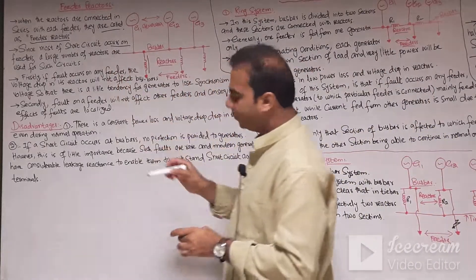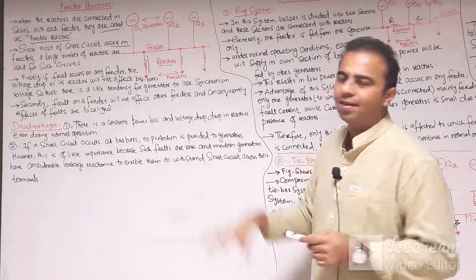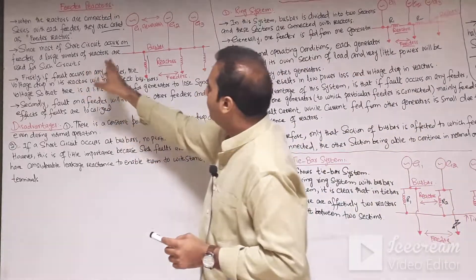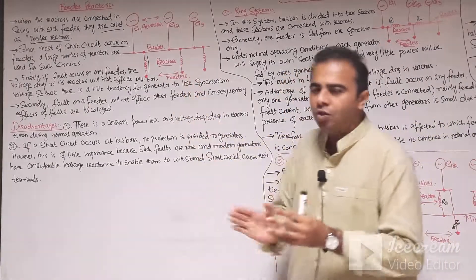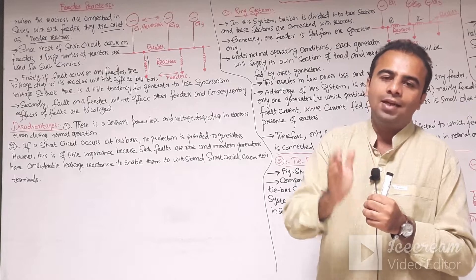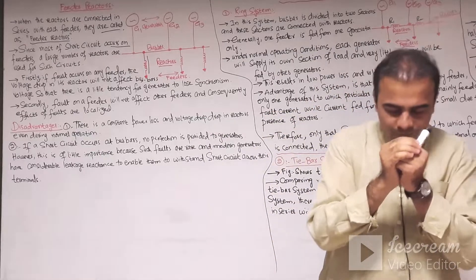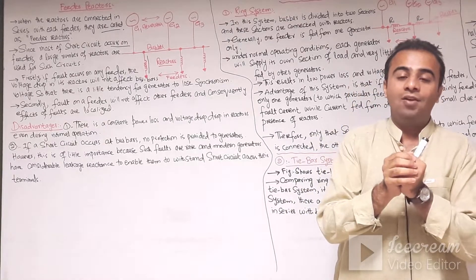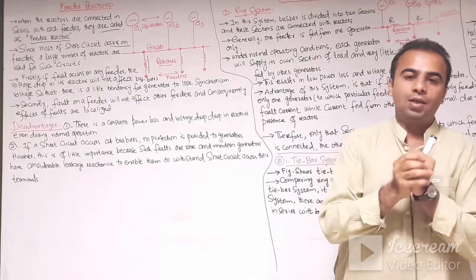Since most short circuits occur on the feeder because loads are connected to the feeders, most faults in the power system occur on the feeder side. A large number of reactors are used for such circuits — the reactors connected in series with the particular feeder limit the short circuit current so that circuit breakers connected with the particular feeder can withstand the amount of short circuit current, because the reactors provide additional reactance to that particular feeder.